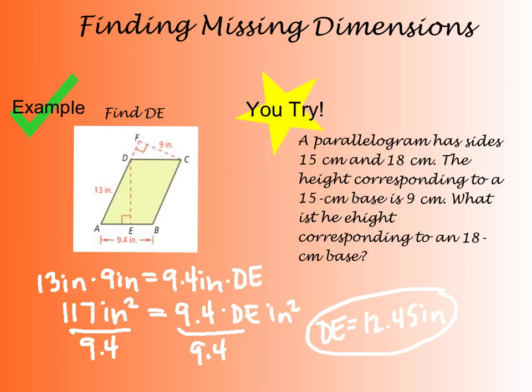So to recap, what I did is I took my two different ways I can solve for the area of this parallelogram. First, I said DA is my base and FC is my height. Then I said that would have to be the same as if I made AB my base and DE my height. I set up my equation. I divided by my 9.4 to get DE by itself, and I ended up with my value of DE equals 12.45. So here's a U-try problem similar to the one that was given to you in the example.